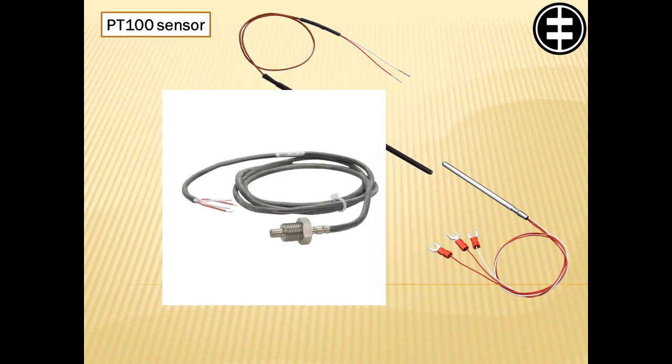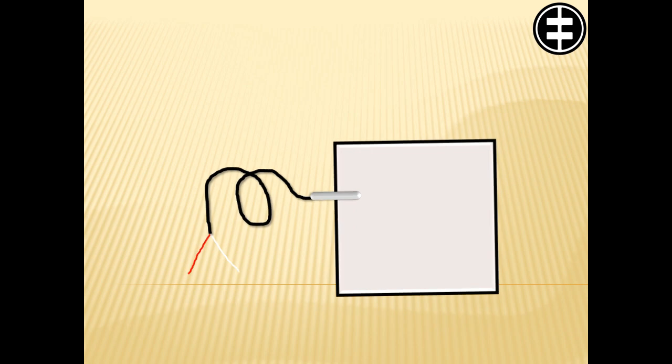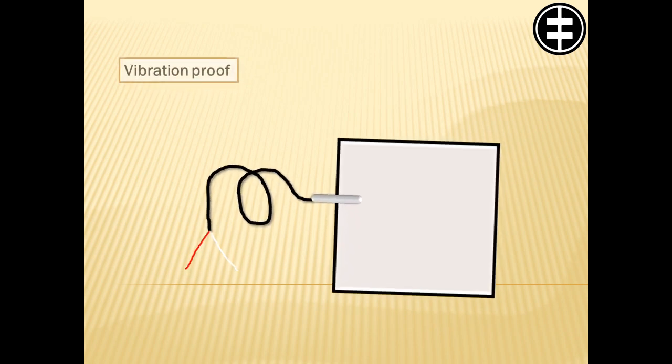Even as a standard version the industrial PT100 sensor is vibration proof and additionally it can be produced as an extra vibration proof version for extreme circumstances.